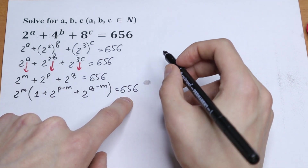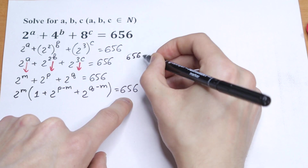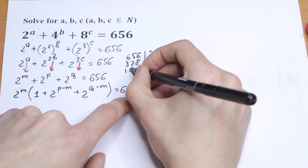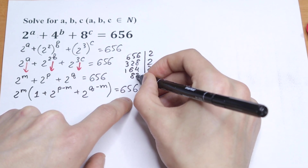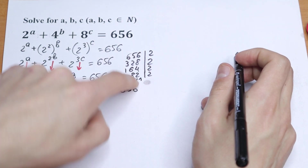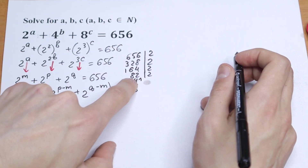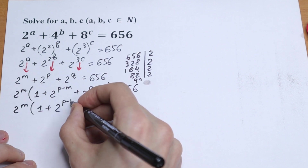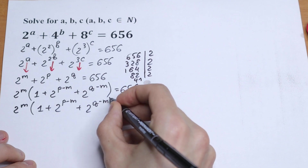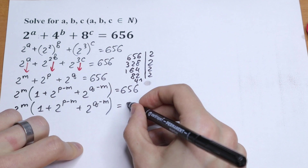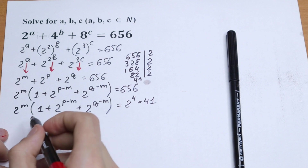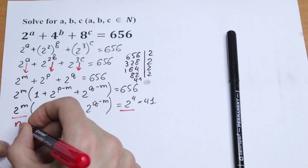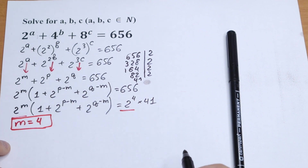So let's factor 656. Dividing by 2 gives 328; dividing by 2 gives 164; dividing by 2 gives 82; dividing by 2 gives 41. So 656 equals 41 times 2 to the fourth power. This is a really good case. We can write 2 to the power m times (1 plus 2 to the power (p minus m) plus 2 to the power (q minus m)) equal to 2 to the fourth power times 41. Since both sides have the same even factor, m equals 4.